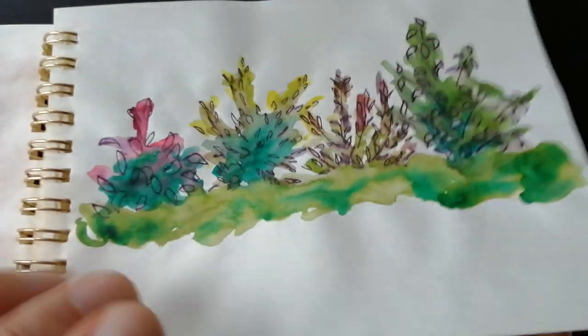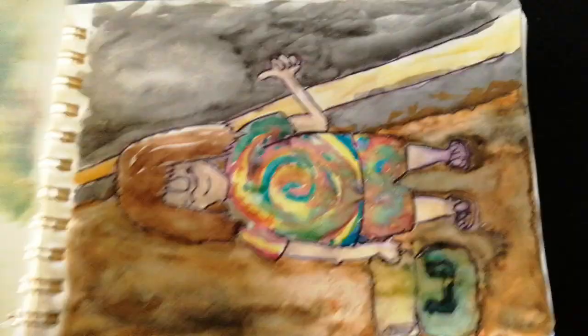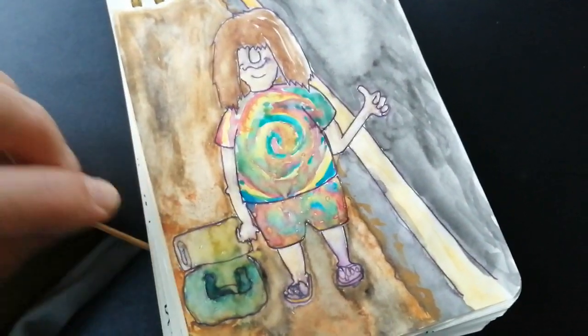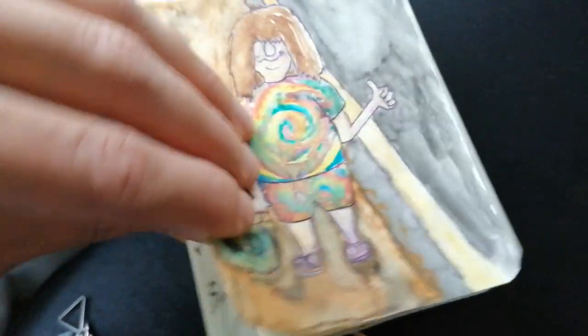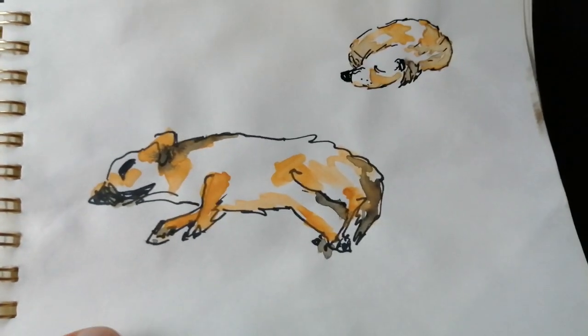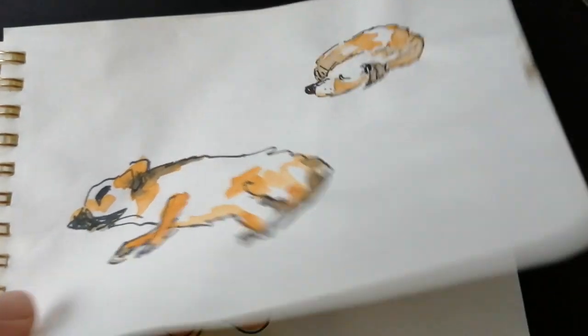Some plants in the garden. Testing the watercolors. A hippie. My dog called Peanut. The girl, she's a girl.